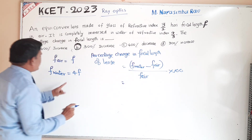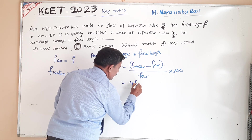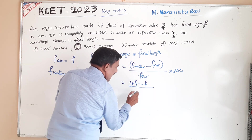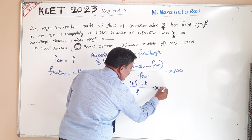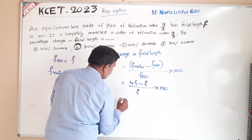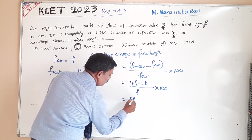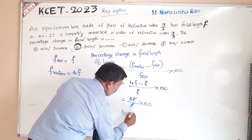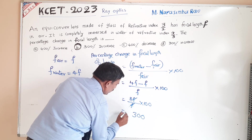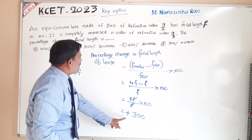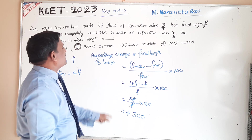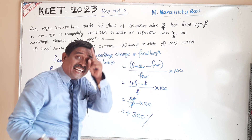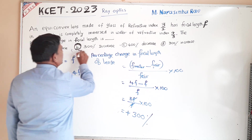Focal length in water is 4f, focal length in air is f. So the calculation is: (4f minus f) divided by f, into 100 — that gives 3f divided by f into 100, which equals 300. We get a plus symbol, meaning there is an increase in focal length — 300 percent increase in focal length.